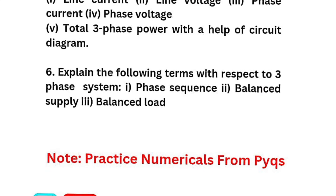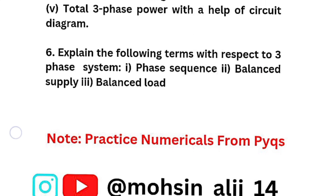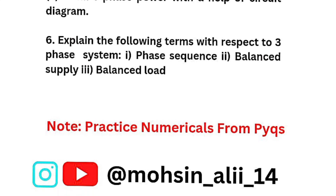For numericals, refer to previous year question papers if you want to score more than 80 marks in Elements of Electrical Engineering. This is all about the super important questions for BEEE 103 or 203. Make sure you cover these questions as early as possible, then try to cover the numerical part so that you can score good marks and cross 90. I wish you all the best for your examinations. Make sure you share this video with your batchmates and friends who are struggling with the subject. Thank you.